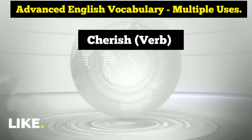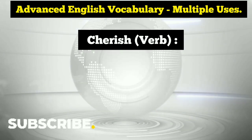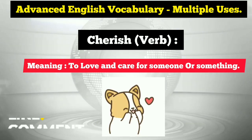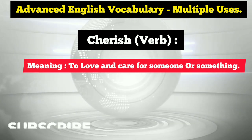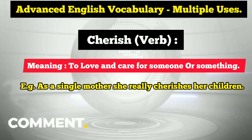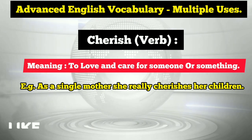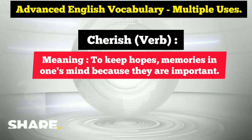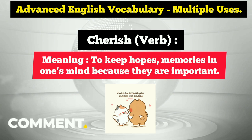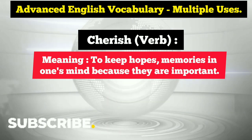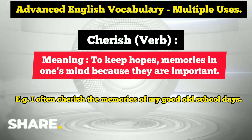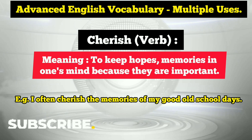The first advanced English vocabulary word is 'cherish.' It can be used in multiple ways as a verb. The first meaning is to love and care for someone or something — to cherish. For example: 'As a single mother, she really cherishes her children,' meaning she loves, cares for, and tries to protect them. The second use of cherish also as a verb means to keep hopes or memories in one's mind because they are important. For example: 'I often cherish the memories of my good old school days,' meaning I keep those memories in my mind because they are important to me.